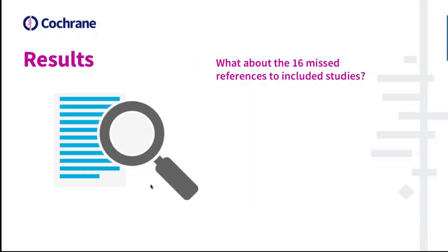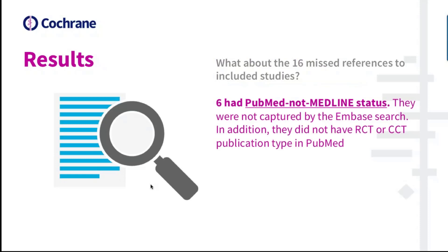Now let's look at the 16 missed references to included studies and how they were missed. Six had PubMed-not-Medline status and were therefore not captured by the Embase search, because while Embase now subsumes Medline content, this does not include all records with a PubMed-not-Medline status. In addition, each of these records did not have RCT or CCT publication type in PubMed, so were not picked up by the PubMed direct feed.